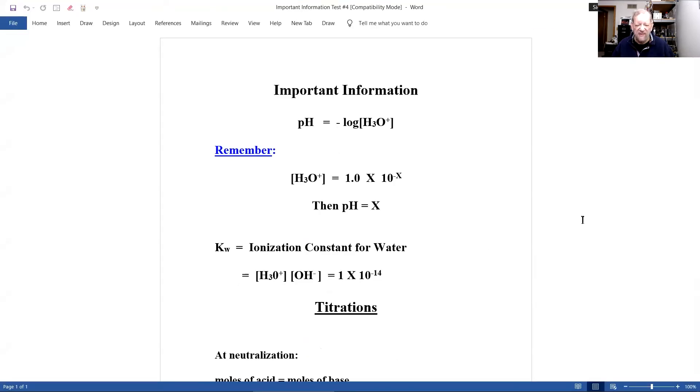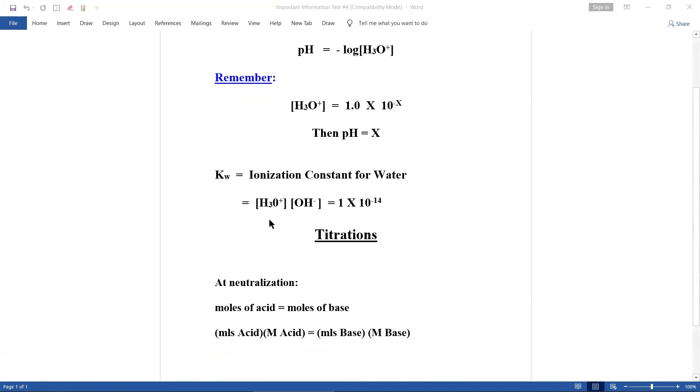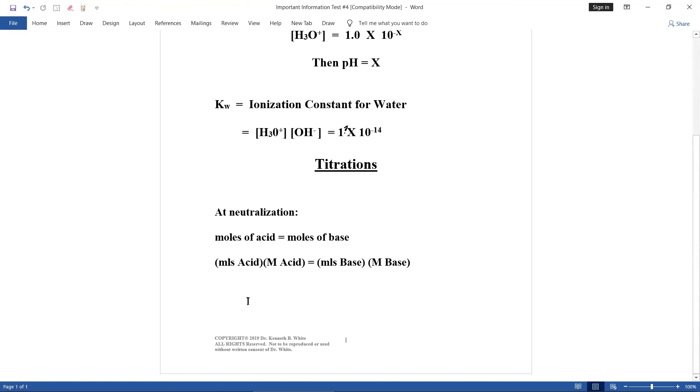All right. Thumbs up, people. Do you see important information on your screen? Everybody see important information on your screen right now? Thank you, Yelena. All right. This will be given to you. What is the pH? And I show you if the hydronium ion equals 1.0 times 10 to the minus x, then pH is x. And I also give you hydronium ion times hydroxide equals, and I should have 1.0. If I don't, it's 1.0 times 10 to the minus 14. And for titrations, neutralization, the most important thing is this. And you'll either have to solve for this or this, given the other three. And you've learned how to do that. And I didn't notice it because I've been... All right. Thank you, Ruben.